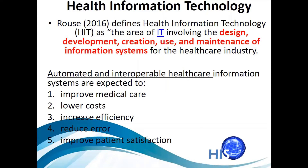Automated and interoperable healthcare information systems are expected to perform the following functions: Number one, to improve medical care — to improve the responsiveness of medical professionals. Number two, to lower the cost. Number three, to increase efficiency. Number four, to reduce errors — to lessen mistakes. Number five, to improve patient satisfaction — so that patients are satisfied with healthcare services through the use of automated healthcare information systems.